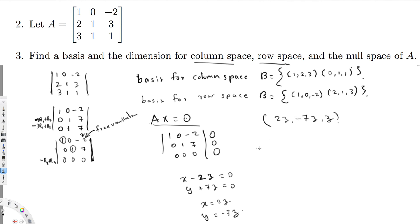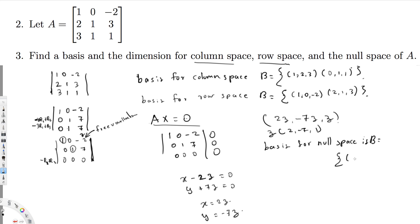We can now write the basis for the null space. Since z can be any real number, we factor out z and write the solution vector as z times [2, -7, 1]ᵀ. We take z = 1 to get the simple basis element. So the basis for the null space is: {[2, -7, 1]ᵀ}.